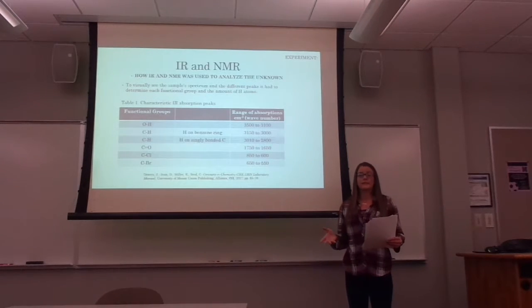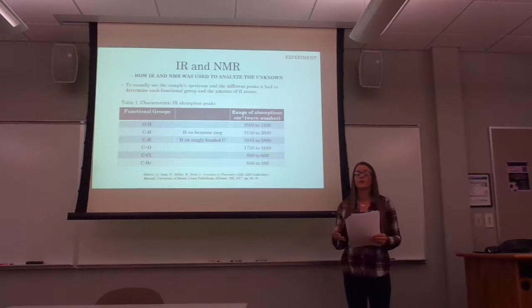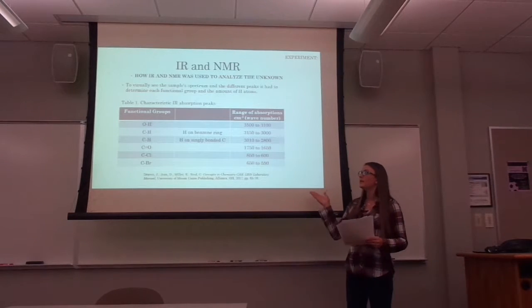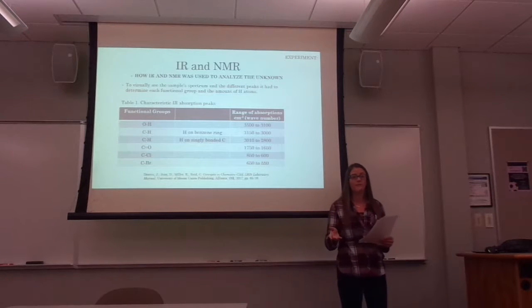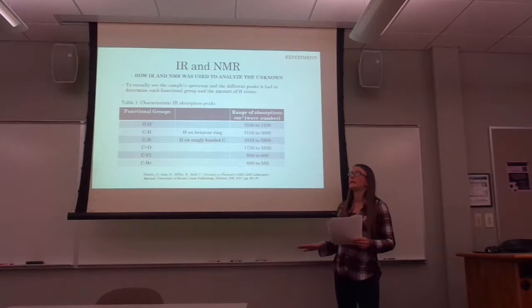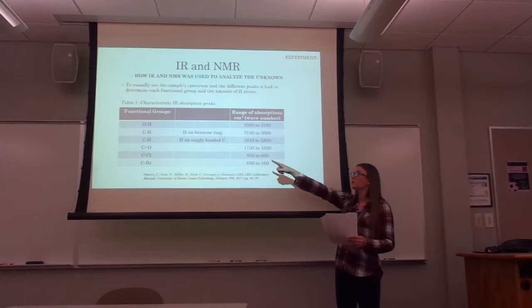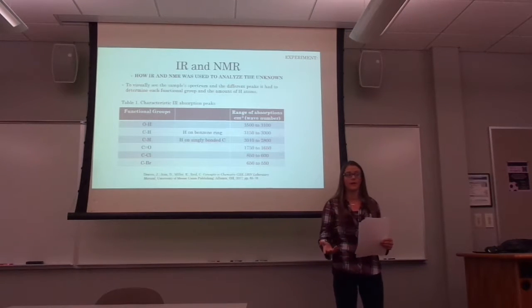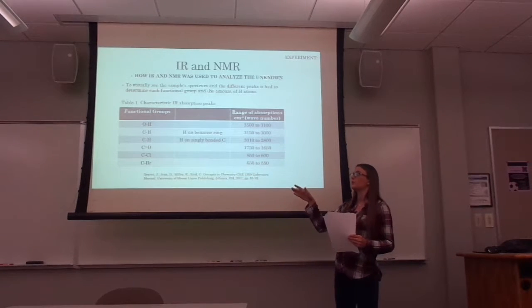We used the spectra to identify which functional groups were present, and NMR to look at the different types of hydrogens. Table 1 is a reference chart that shows where peaks fall under the range of absorption to determine the functional group from IR data. For example, the first functional group has a range of absorption of 3,500 to 3,100 wave numbers, identifying it as an OH functional group.